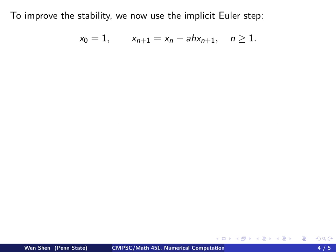To improve the stability, we now use the implicit Euler step. The implicit Euler step is a first-order method where the derivative is evaluated at time n+1: x_0 = 1, x_(n+1) = x_n - ahx_(n+1), n ≥ 1.